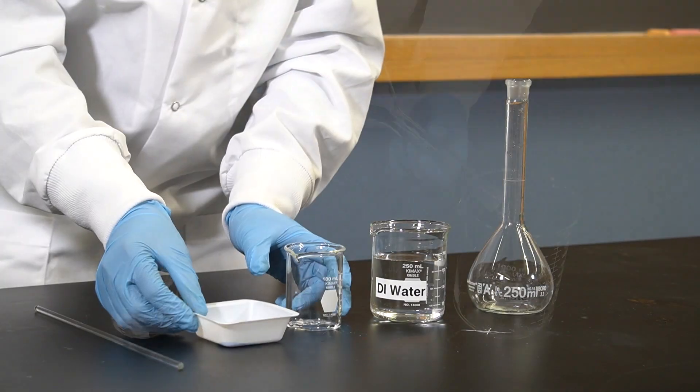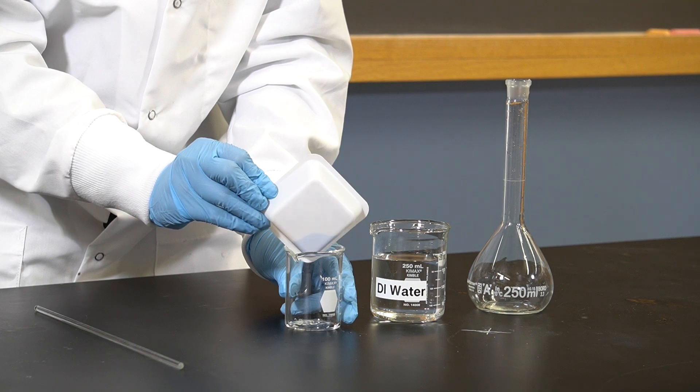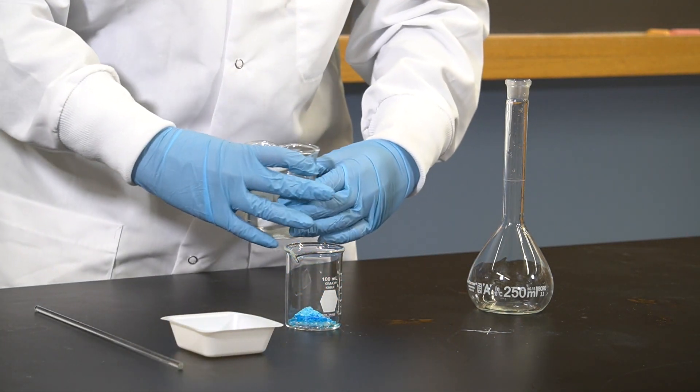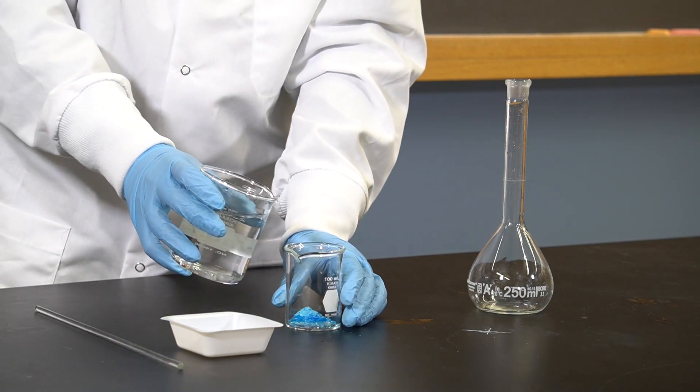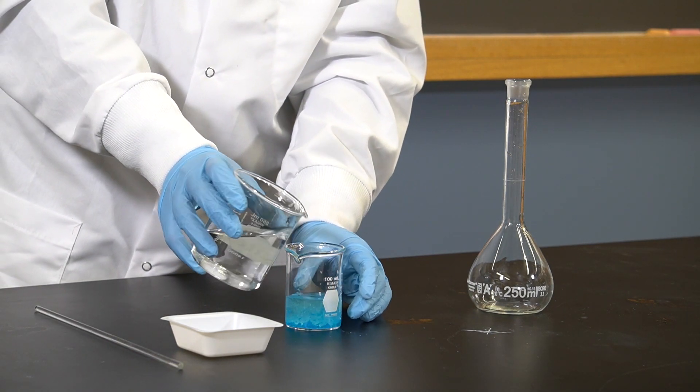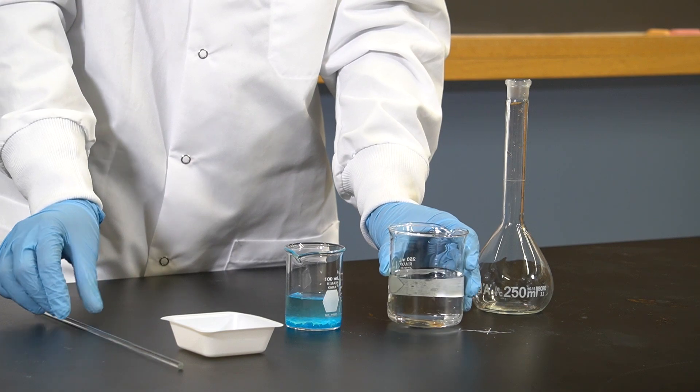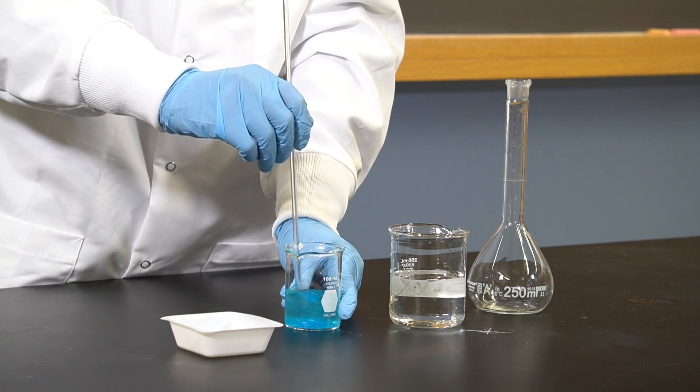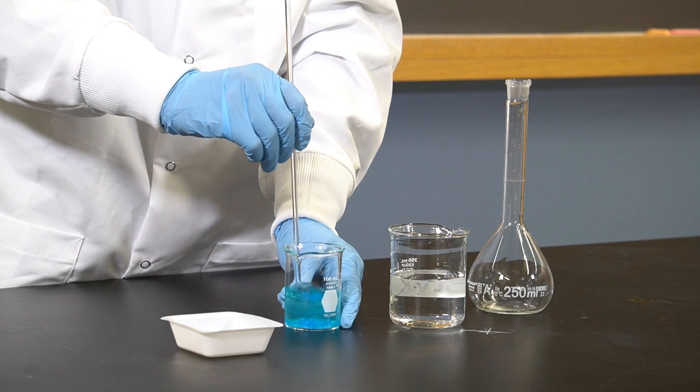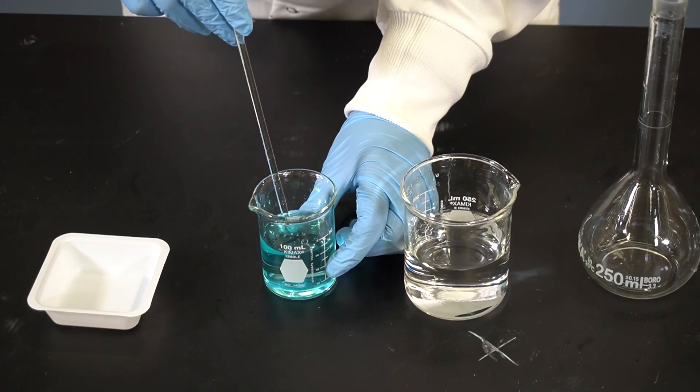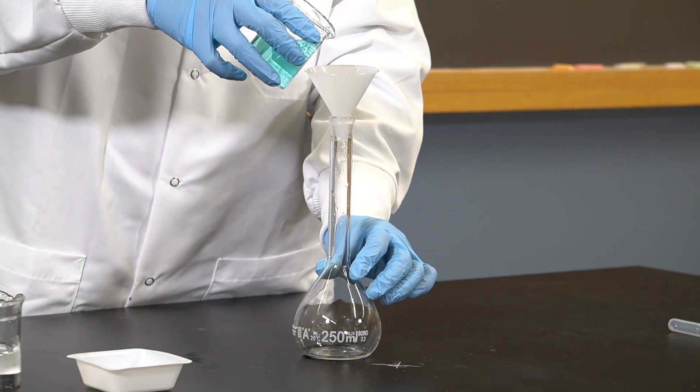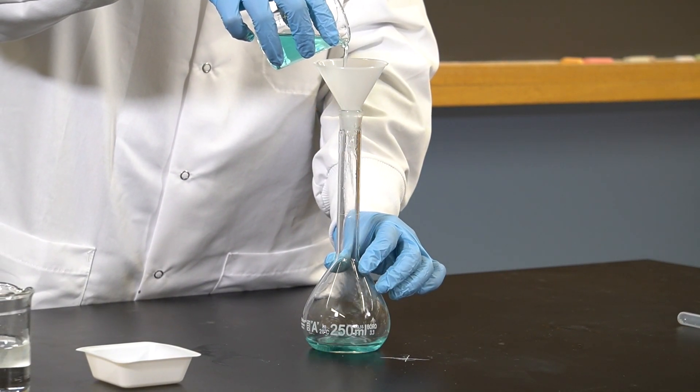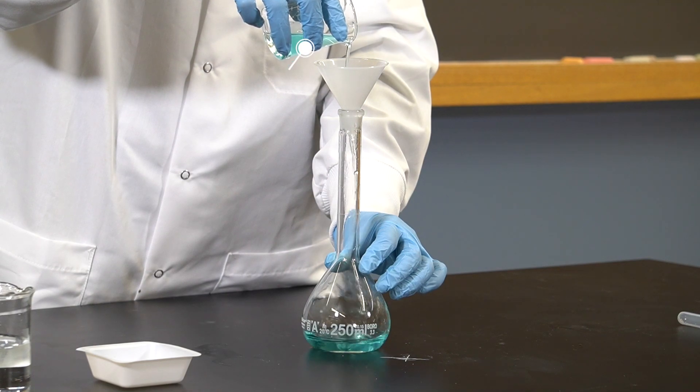Given the narrow neck of the volumetric flask, transferring the solid solute directly into it can be tricky. It's easier to pre-dissolve the solid solute in a small amount of solvent in a beaker first. Then, transfer the solution into the flask using a funnel. Do not use too much solvent in this step, otherwise you will exceed the total target volume of your solution. When transferring the solution into the volumetric flask, it is a good idea to hold the flask in one hand to avoid it from tipping over.